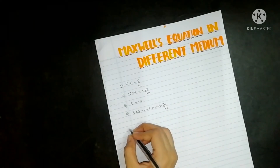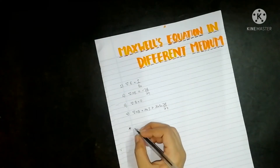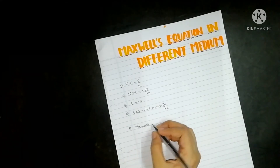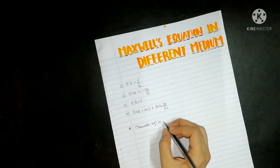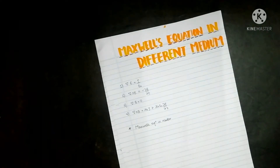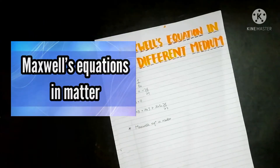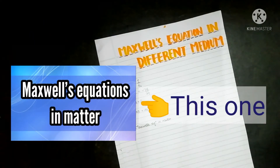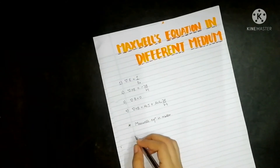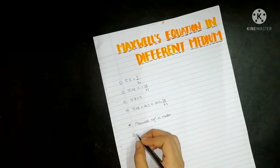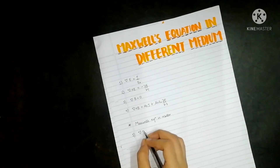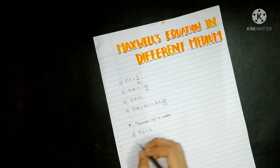Next we will see Maxwell's equations in matter. I've already uploaded a video on Maxwell's equations in matter; in that video you can see how the Maxwell's equations are modified for matter. So let's write them down. The first equation is: del dot D is equal to rho f.